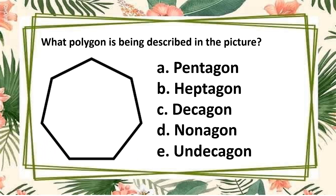For the next picture, let us count the sides of this polygon: one, two, three, four, five, six, seven. This polygon has seven sides. What do you call this polygon? The answer is heptagon.